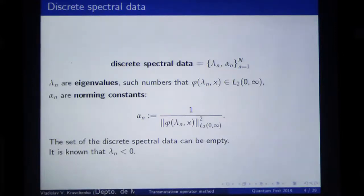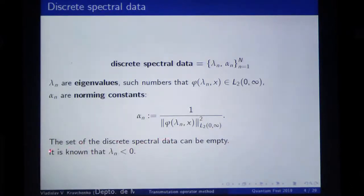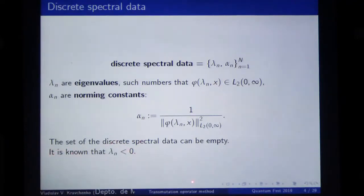The discrete spectral data can be empty, or it can be not. But if it is not empty, then the lambda_n are all negative. This is very well known.